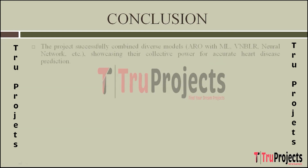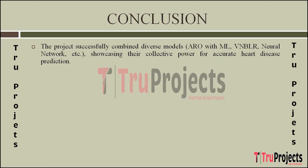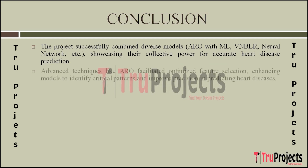Conclusion: the project successfully implemented an innovative ensemble of machine learning models including ARO with ML, VNBLR, Neural Network, Decision Tree, SVM, Decision Tree with Gradient Boosting, and Naive Bayes. This diverse set of models contributed to a more accurate and robust heart disease prediction system. By leveraging advanced techniques like Artificial Rabbit Optimizer, the project achieved optimized feature selection, enhancing the model's ability to capture crucial patterns and resulting in improved accuracy and reliability in predicting heart diseases.